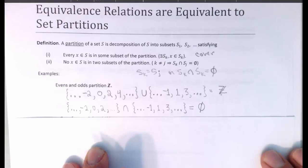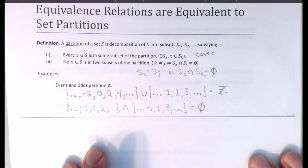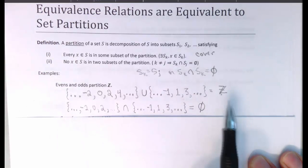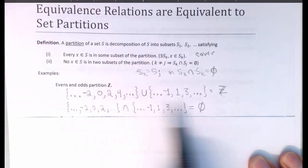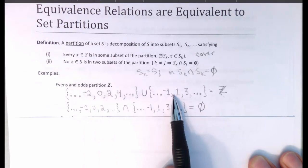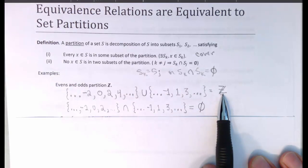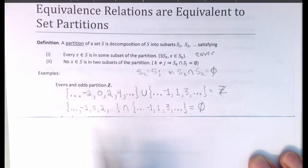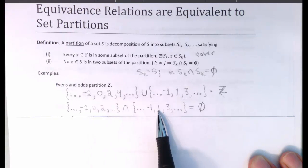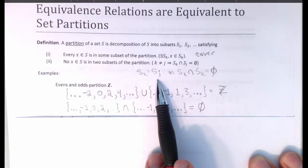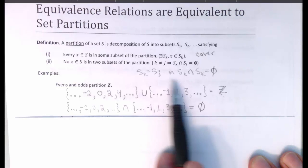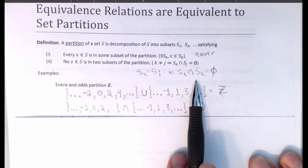Let's take a couple of examples of set partitionings. If we take the set of integers, we can partition them between the evens and the odds. It's certainly true that taking the evens and odds together gives the set of all integers, and there is no integer that is both even and odd. So we have just S1 and S2, and if you pick two of these subsets, you either pick the same one twice or you pick two that have a completely empty intersection.